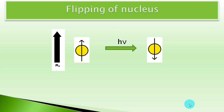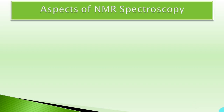The nuclei orient themselves from parallel to anti-parallel alignment with respect to the external magnetic field, and this particular incident is known as flipping of the nucleus. To learn NMR, it has been divided into four different aspects, known as the aspects of NMR spectroscopy.